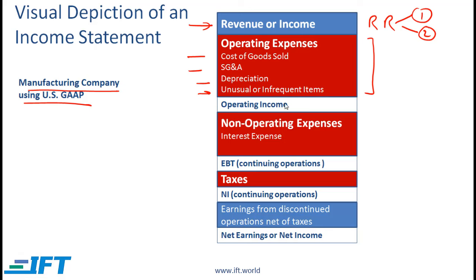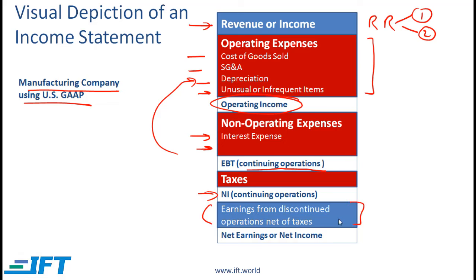We apply expense recognition rules and the matching principle when showing expenses in the income statement. We subtract operating expenses to arrive at operating income, then subtract non-operating expenses — for a manufacturing firm, interest expense is a classic non-operating expense — to arrive at EBT, earnings before tax for continuing operations. After subtracting taxes, we get net income from continuing operations. Earnings from discontinued operations net of taxes are then shown after that, with details in the footnotes, giving us the final net income for the overall firm.